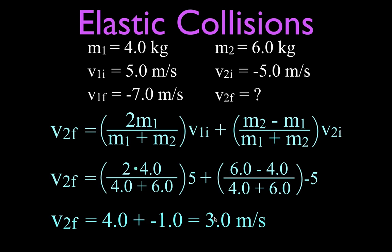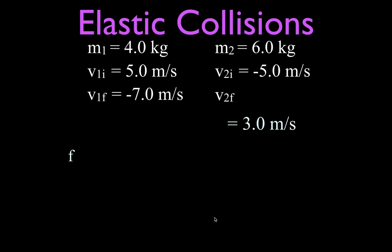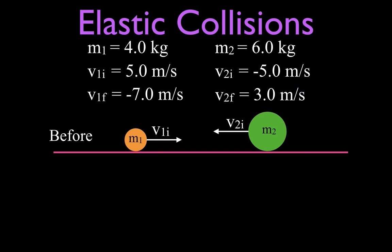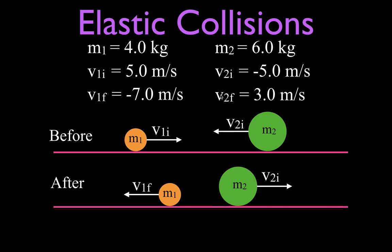It's nice when what you think is going to happen actually turns out right in your math. The direction of the two objects has changed — they're moving in the opposite direction from where they originally were. The final velocity of mass one is minus 7, the final velocity of mass two is 3. Let's draw a quick picture — you can see they just bounce off each other and move in opposite directions.